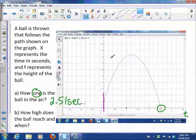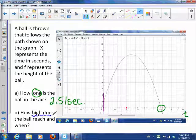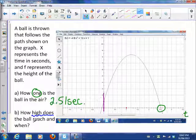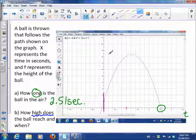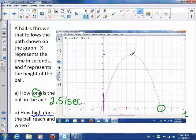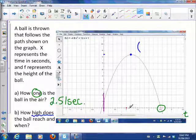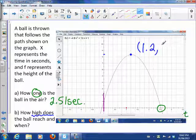Now the next question, how high does the ball reach? So how high, that's dealing with height. So we want to talk about the Y coordinate. And how high does it go? Well, that's the highest point right there. So that's right about there. So we can see that that point right there, the X coordinate is about 1.2. And the Y coordinate looks like it's about 8.4.